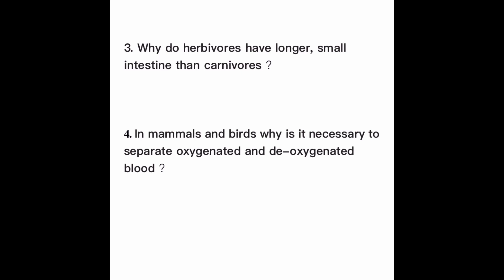Question number 4: In mammals and birds, why is it necessary to separate oxygenated and deoxygenated blood? Remember that birds and mammals have a double circulatory system. In a double circulatory system, oxygenated and deoxygenated blood are maintained separately, making the circulatory system more efficient and helping maintain a constant body temperature. That is all you need to mention.